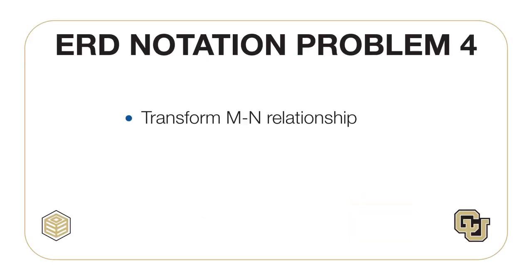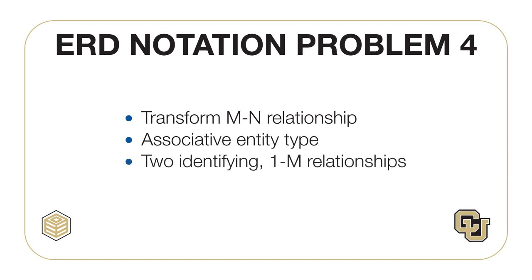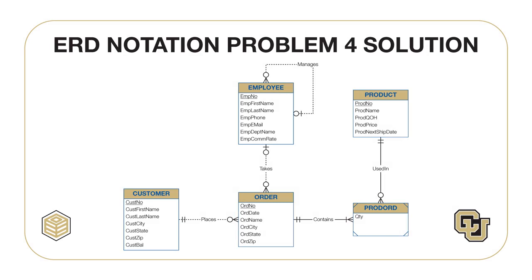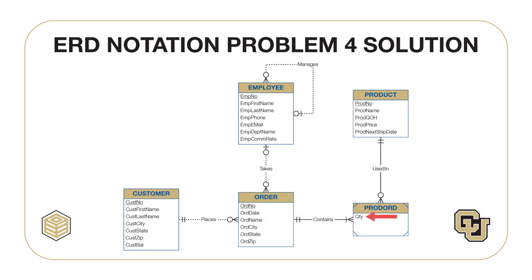In this problem, you should revise the ERD from Problem 4 by transforming the many-to-many relationship into an associative entity type with identifying one-to-many relationships. This ERD shows the solution for Problem 4. The Contains relationship has been transformed into the ProductOrder associative entity type and two one-to-many identifying relationships: Contains and UsedIn. The QTY (quantity) attribute is now part of the ProductOrder entity type. In the transformation, you need to provide names for the identifying relationships; the associative entity type can use a noun instead of the verb used for the many-to-many relationship.